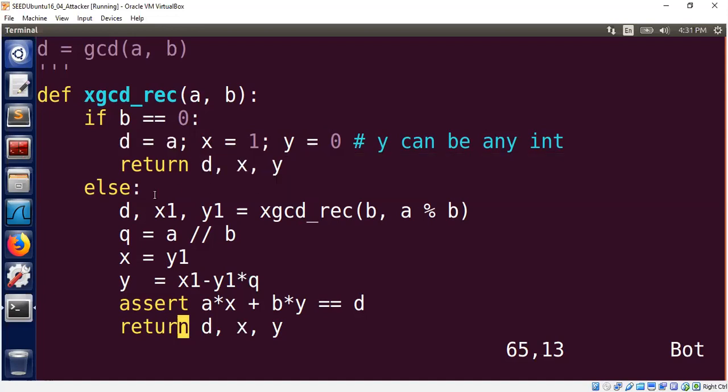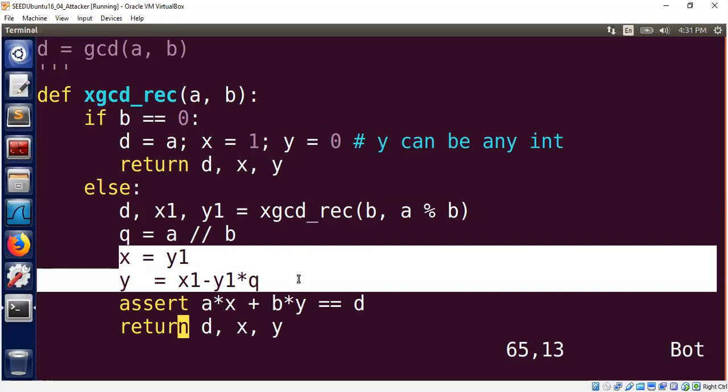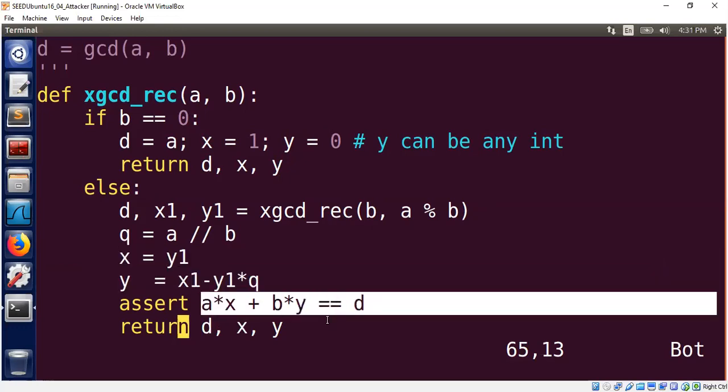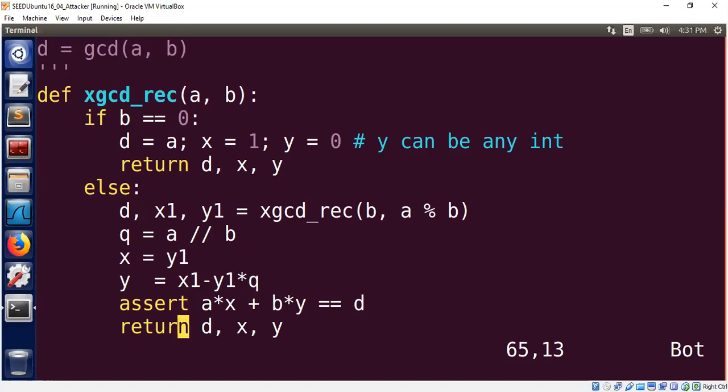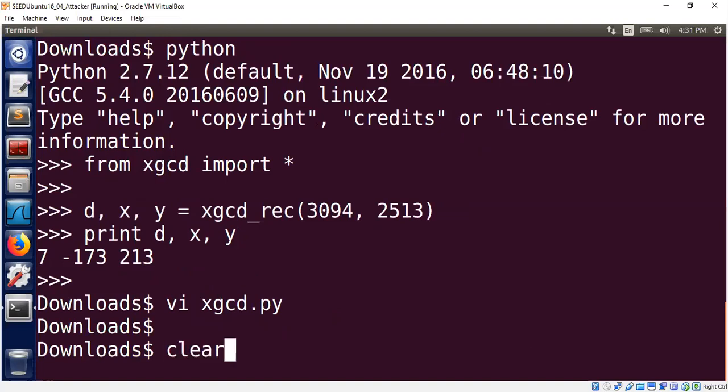Now the high level problem is if B is not equal to zero, you compute the extended GCD algorithm for B comma A percentage B. Once you solve that you find a new X and Y exactly like the way I explained on the whiteboard. You compute the quotient, you use X to be Y1 and Y to be X1 minus Y1 times Q. And you can even have an assert statement that checks that your algorithm is correct.